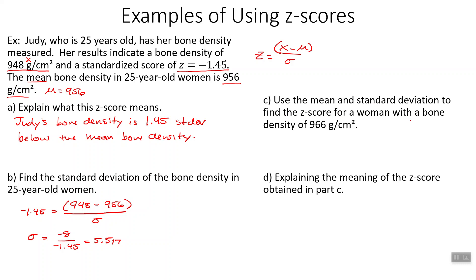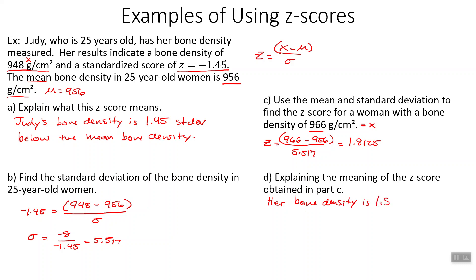Use the mean and standard deviation to find the z-score for a woman with a bone density of 966. That's another x value. Our mean is still 956 and our standard deviation has not changed. So to find the z-score: 966 minus 956, which is 10, divided by 5.517. That works out to 1.8125 — 1.8 is probably plenty. That means her bone density is 1.8125 standard deviations above the mean. It's positive, so it is above the mean.